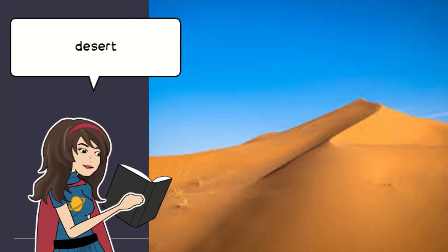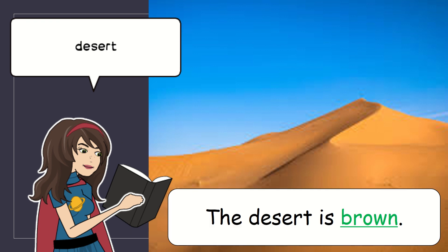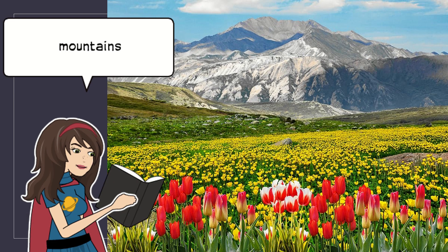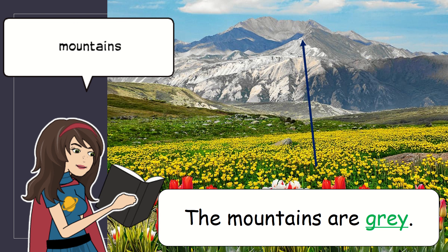The jungle is green and brown. Desert. The desert is brown.